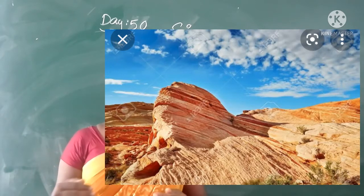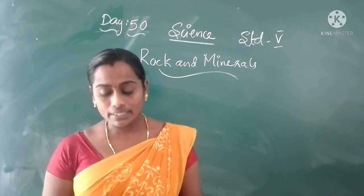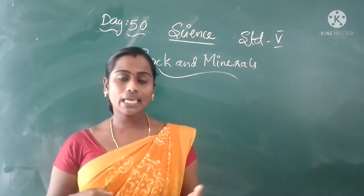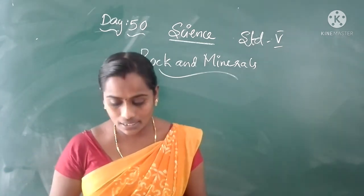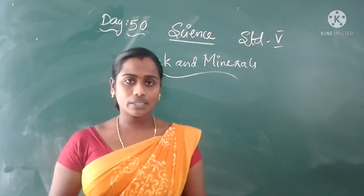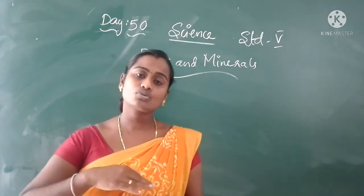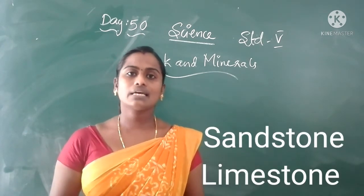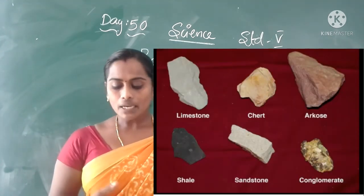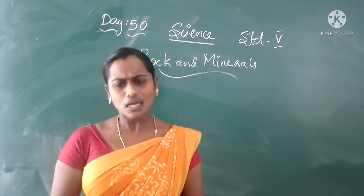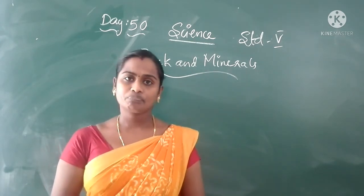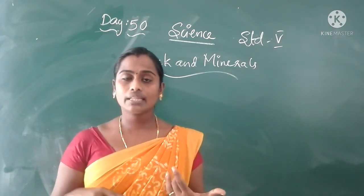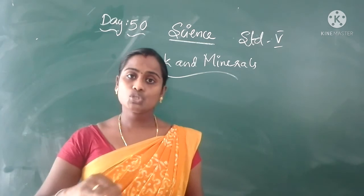The second type is sedimentary rocks. Sediment means settled down. Sedimentary rocks are formed by clay and sand, which are deposited in many layers over many years. The clay and sand deposited in layers over many years form sedimentary rocks. The best examples are sandstone and limestone, which are used to make buildings. Limestone is also used to make cement.